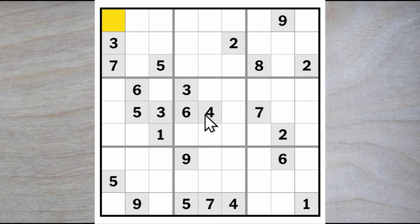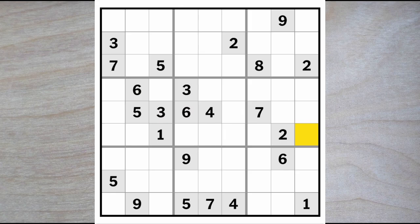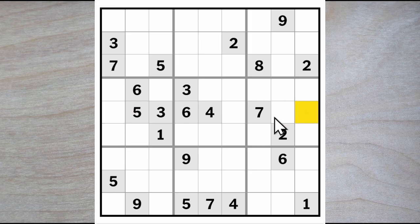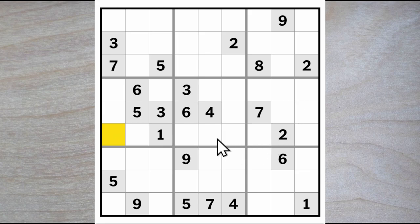We see a 6, 0, 3 here and a 6, 0, 3 here, so a 6, 0, 3 must go in these two squares. That means that a 4 and a 5 can't go here, here, here, or here. So 4 and 5 must go in two of these three squares, giving me a 4 for one of these two squares and a 5 for one of these two squares.